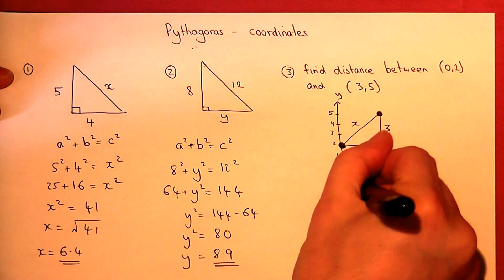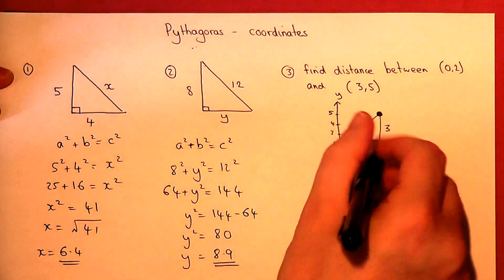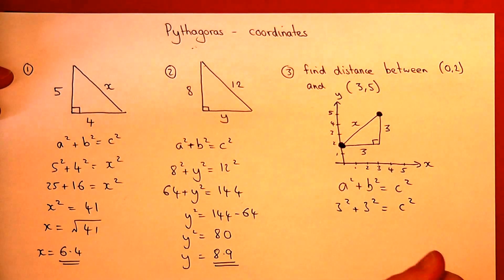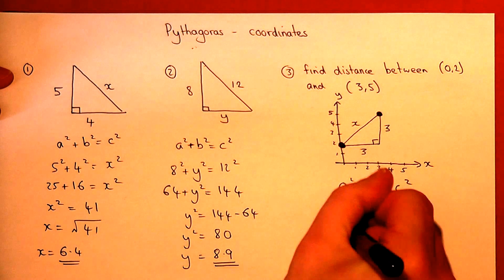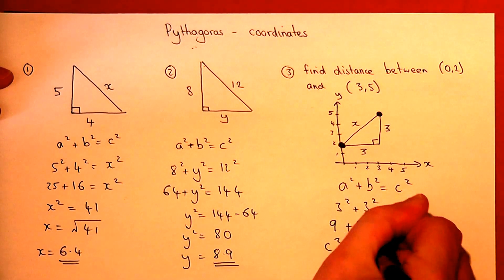So Pythagoras says that a squared plus b squared equals c squared. a is 3, so 3 squared plus 3 squared is c squared. 3 squared is 9, so 9 plus 9 is c squared, therefore c squared equals 18.